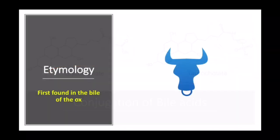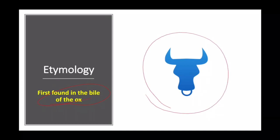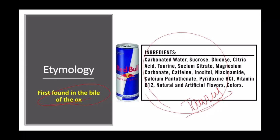Conjugation of glycine with cholic acid produces glycocholate. Conjugation of taurine with cholic acid produces taurocholate. The reason behind the name taurine is that it was initially found in the bile of the ox — taurus stands for bull. Interestingly, the energy drink Red Bull contains taurine.